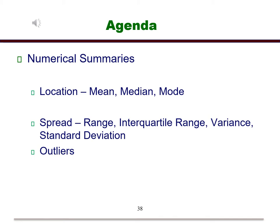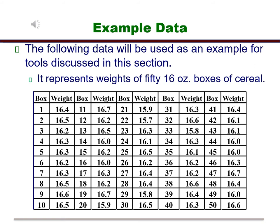Let's start with an example. This data represents a sample of 50 cereal boxes. One of the critical-to-quality characteristics in this case is weight. The cereal boxes should weigh exactly 16 ounces. Do you think that they all will?